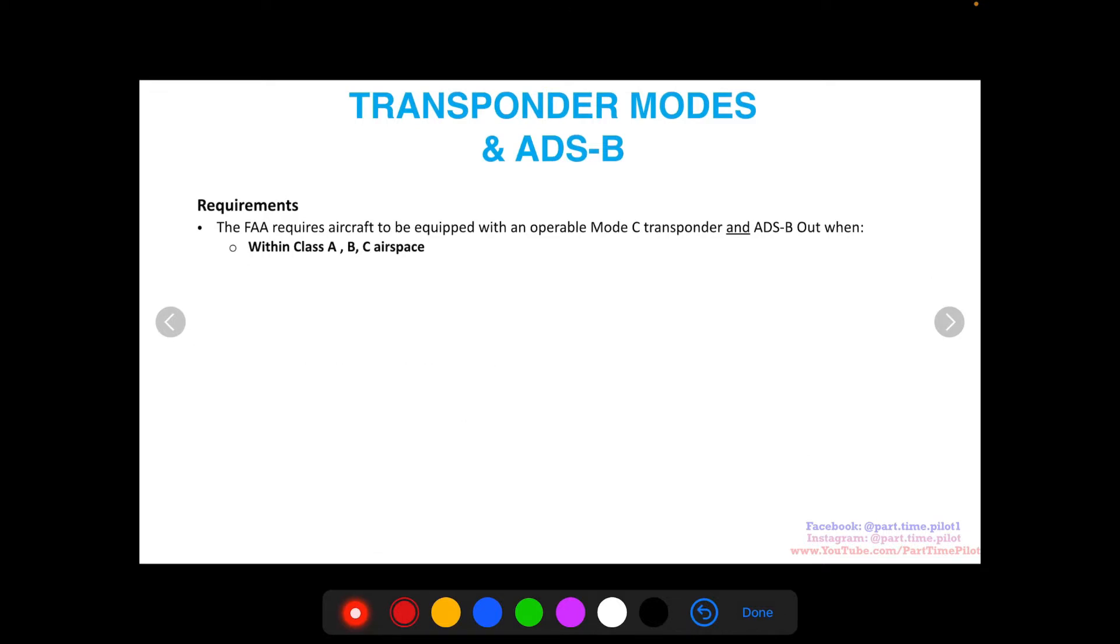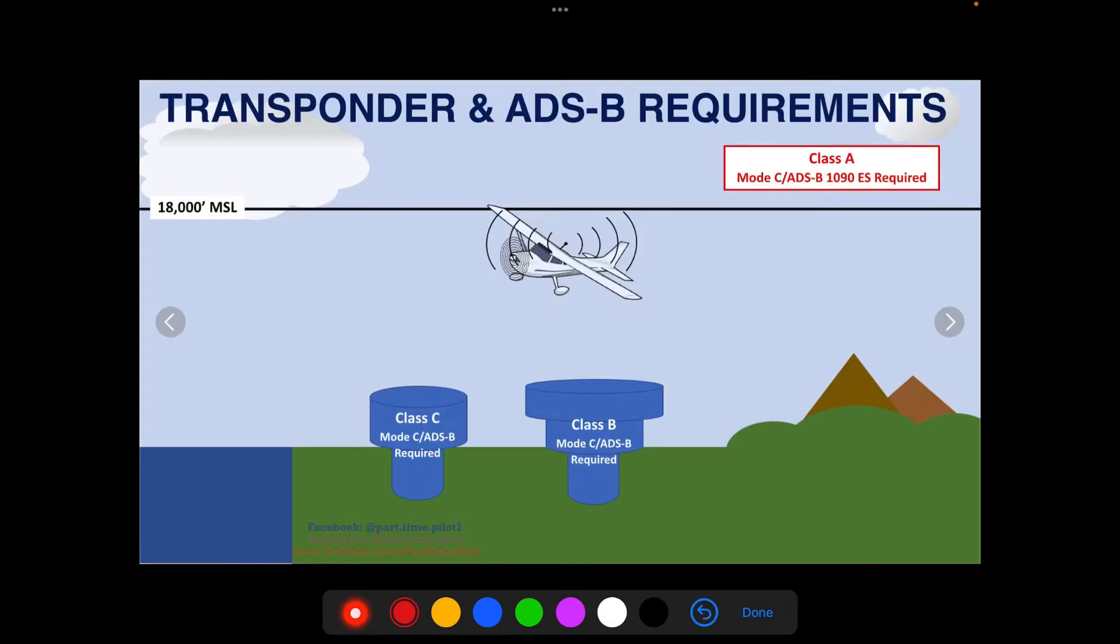Let's get into the requirements. The FAA requires aircraft to be equipped with an operable mode C transponder and ADS-B out when in Class A, B, or C airspace. So Class A is above 18,000 feet, you have Class C here, and Class B. Mode C and ADS-B out both required in those airspaces.